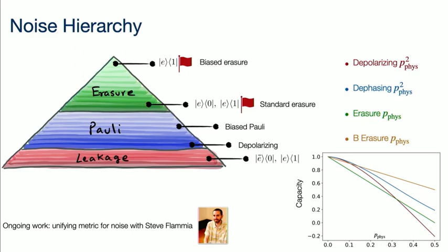If I plot the capacities as a function of p_physical, for low physical error rates all four channels look similar, but for high enough rates, the biased erasure channel still has higher capacity than all other channels. If there are multiple ways for you to encode a qubit in your system, biased erasure wins. So try to design a qubit that has biased erasure. But how your errors scale in your system can be different, and maybe in your system it's better to design a dephasing channel rather than a biased erasure channel — it all depends on the details of your system.